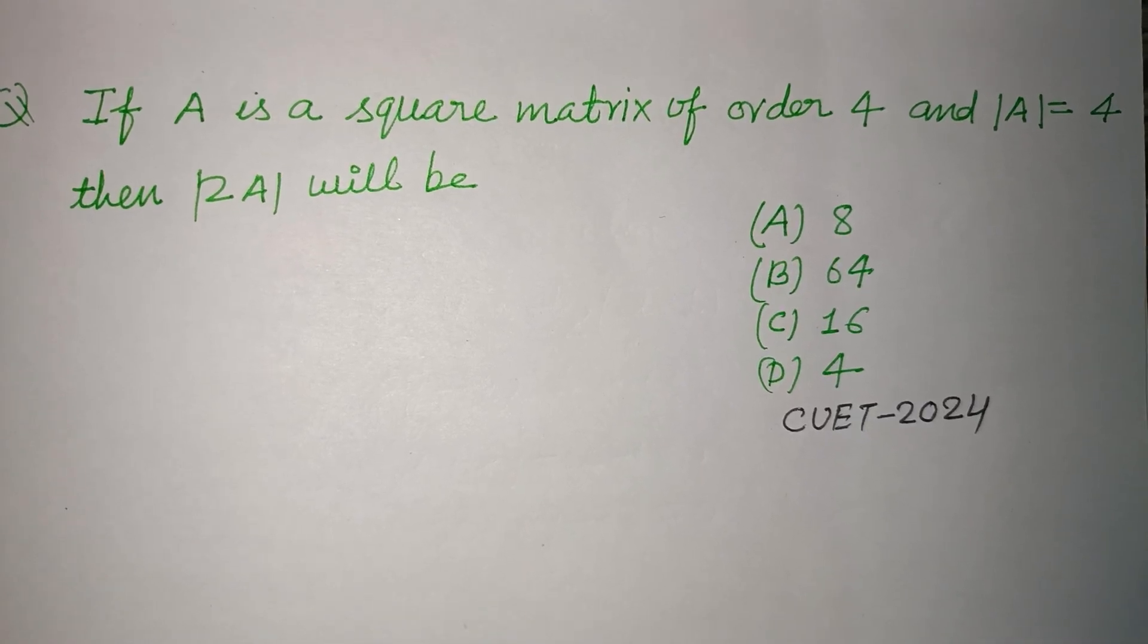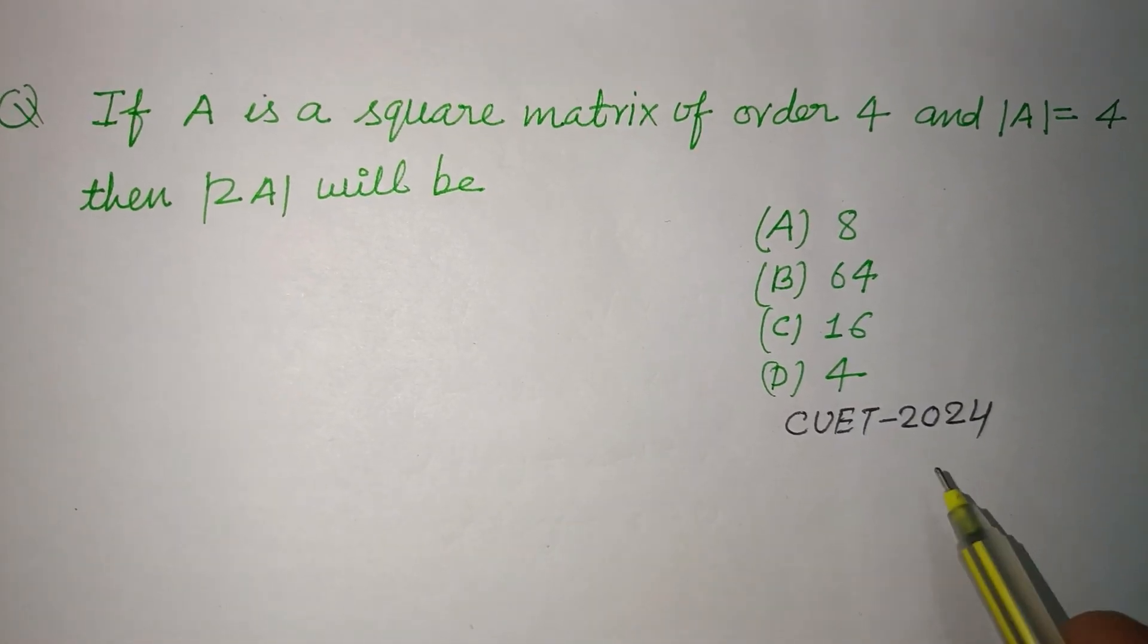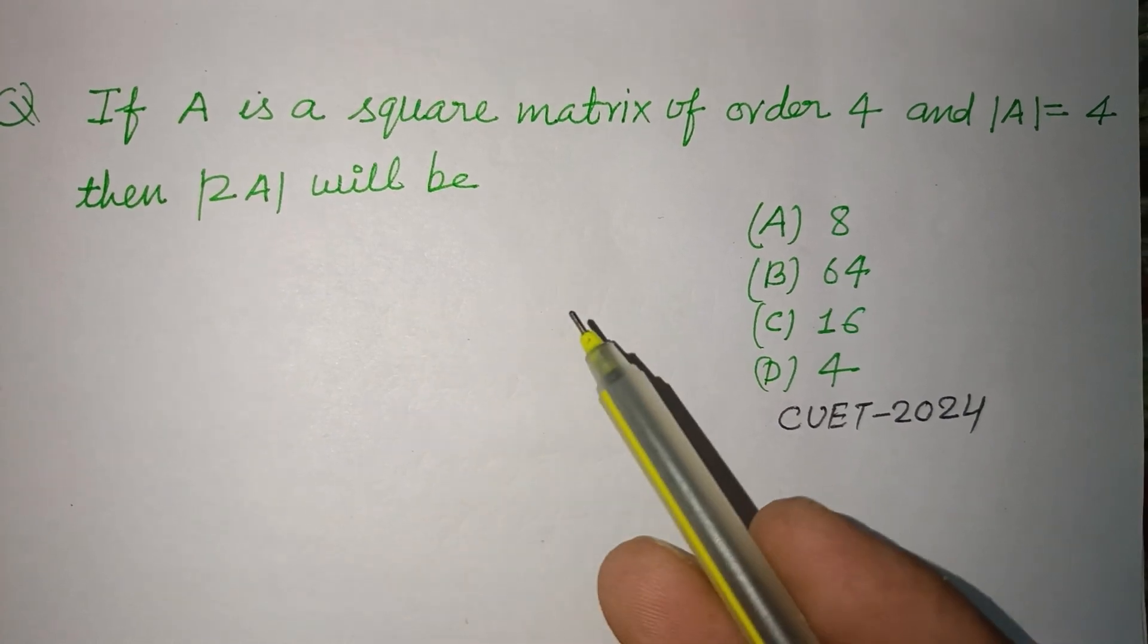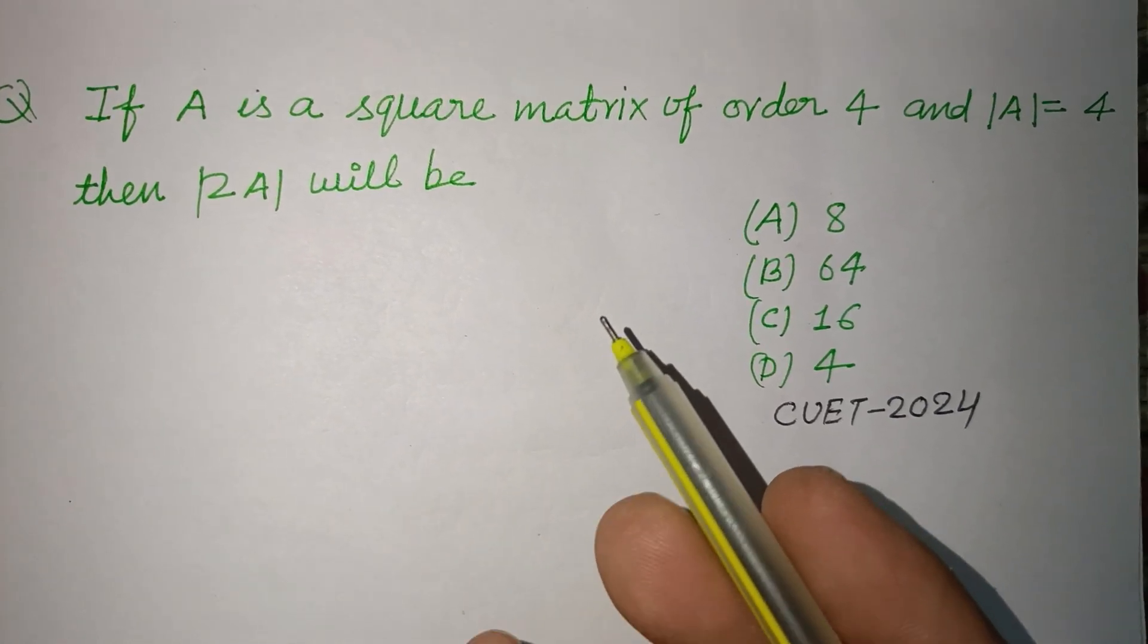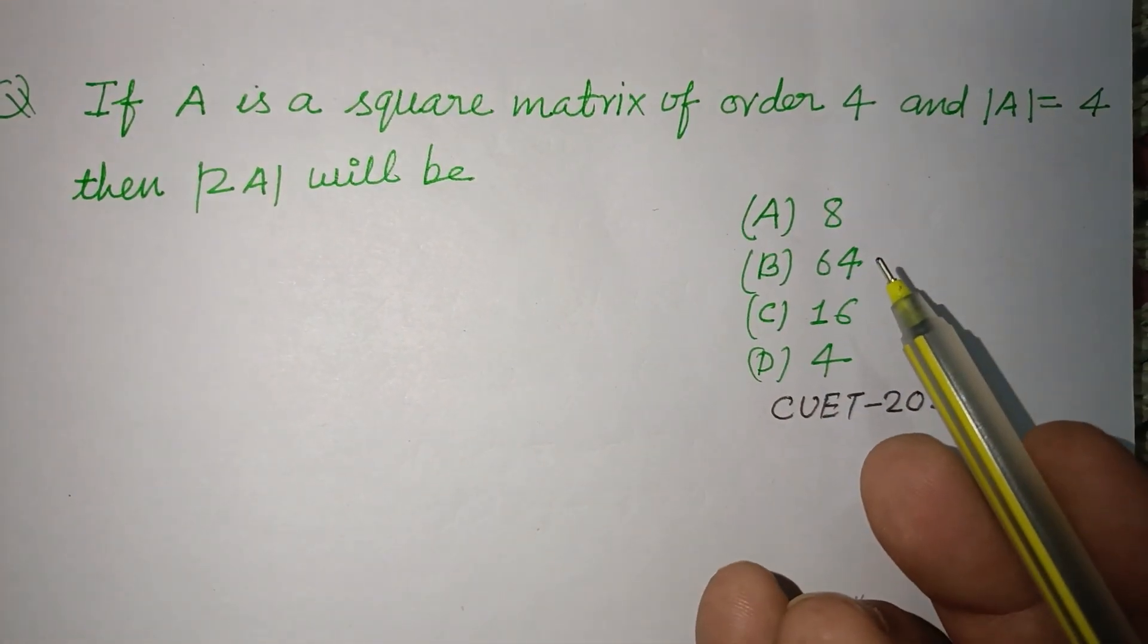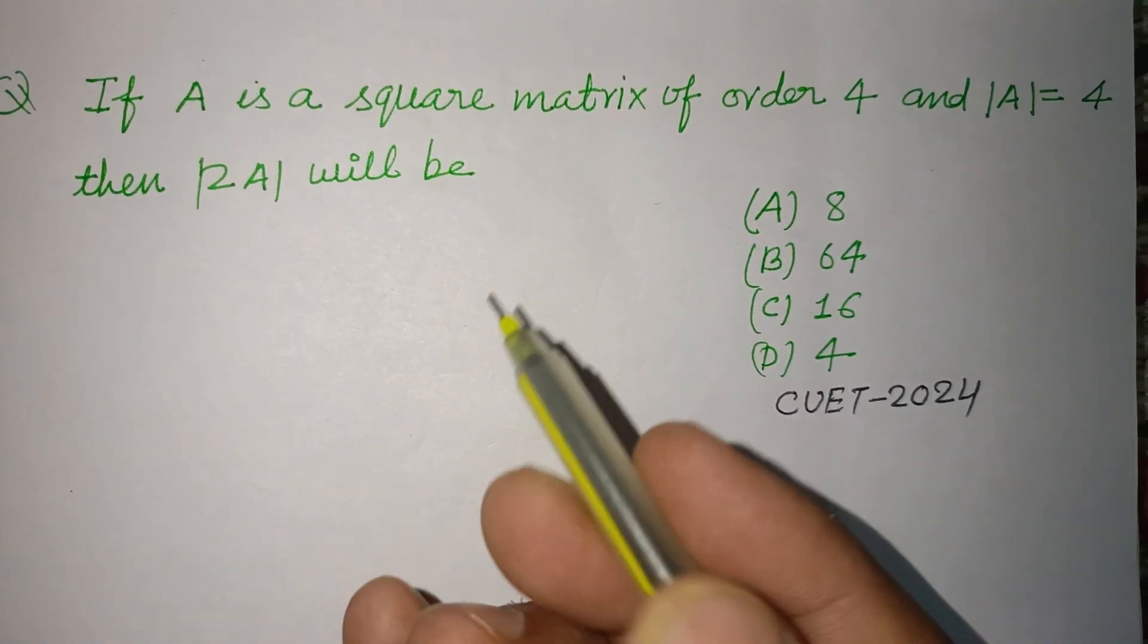Welcome to this YouTube channel. Question from CUET 2024. If A is a square matrix of order 4 and determinant of A is given as 4, then determinant of 2A will be.